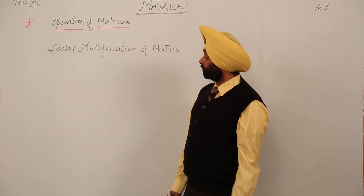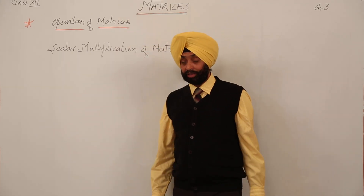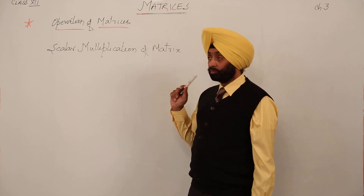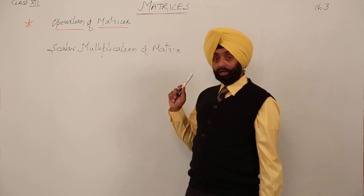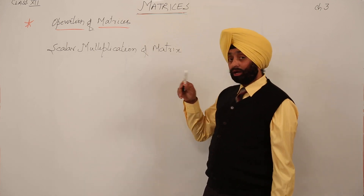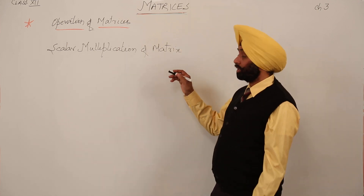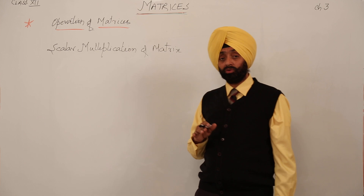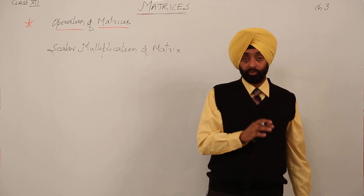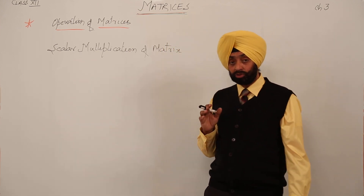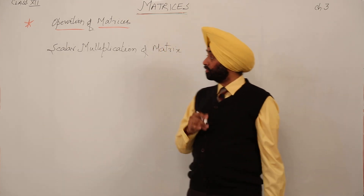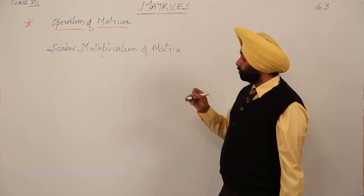For the operation of matrices, we have done the first part, which was addition of matrices. After doing the addition of matrices, we covered properties based on addition: commutative property, associative property, additive inverse, and additive identity. Now we are moving on to scalar multiplication of a matrix.